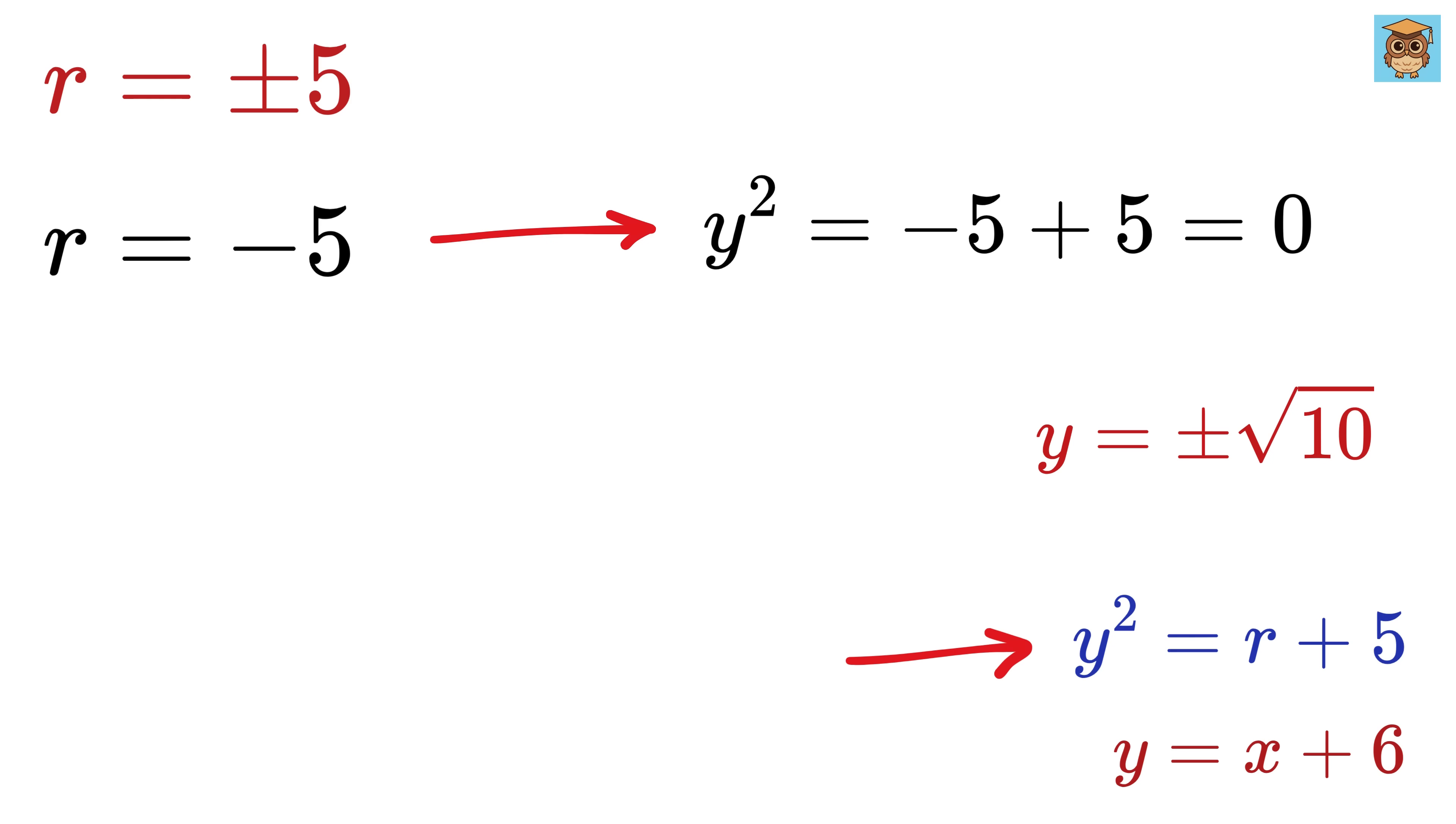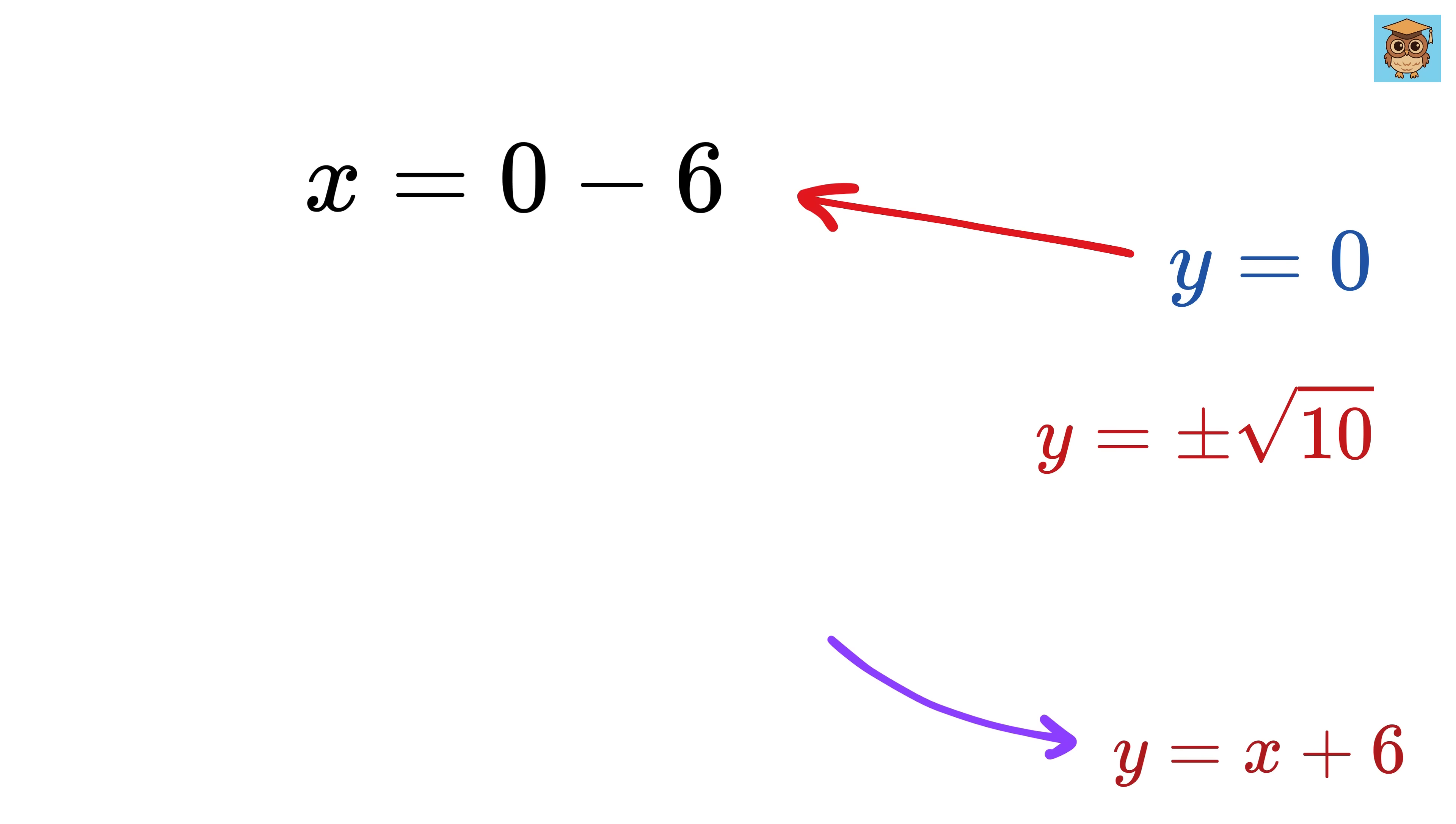Now when r equals minus 5, we get y squared equals 5 minus 5, or 0, and thus y equals 0. Now y equals 0 gives x equals 0 minus 6, or minus 6.